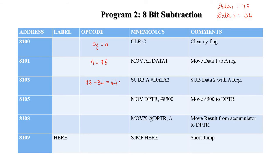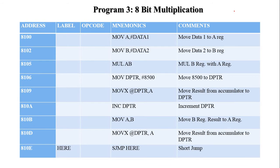The result 44H is available in the accumulator register. The result address 8500H is moved to the data pointer, and the result is then moved from the accumulator to the data pointer. So memory location 8500H contains 44H, which is the 8-bit subtraction answer. Using a short jump instruction, the program is stopped.